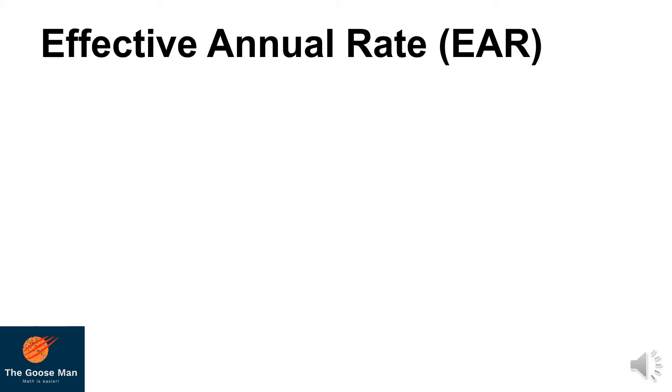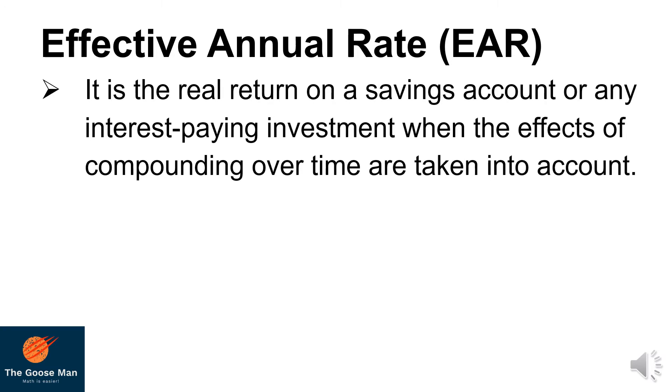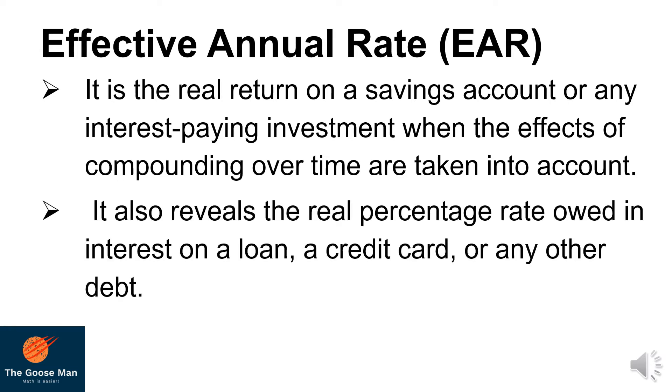Let's talk about the Effective Annual Rate, or commonly known as EAR, also known as Effective Rate. This is the real return on a savings account or any interest-paying investment when the effect of compounding over time is taken into account. It also reveals the real percentage rate owed in interest on a loan, a credit card, or any other debt.